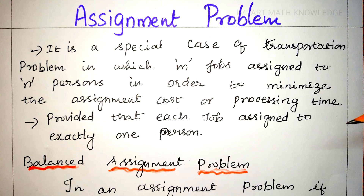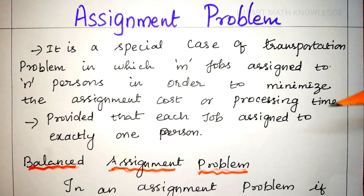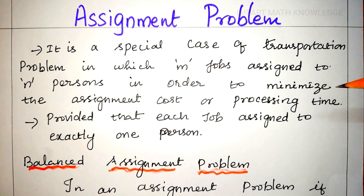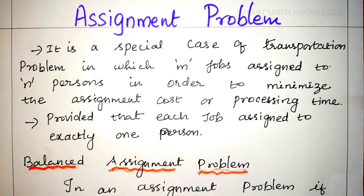In this video, I am going to discuss the assignment problem. Assignment problem is a special case of transportation problem in which M jobs are assigned to N persons in order to minimize the assignment cost or processing time, provided that each job is assigned to exactly one person. This assignment technique is used to assign the right job to the right person to complete the task on time with the minimum cost.